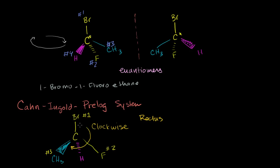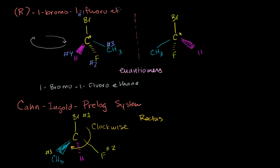So we would call this molecule right here not just 1-bromo-1-fluoroethane — this is R. R for rectus. Or you can even think 'right,' although we'll see left is used as S, which is sinister. But this is R-1-bromo-1-fluoroethane.